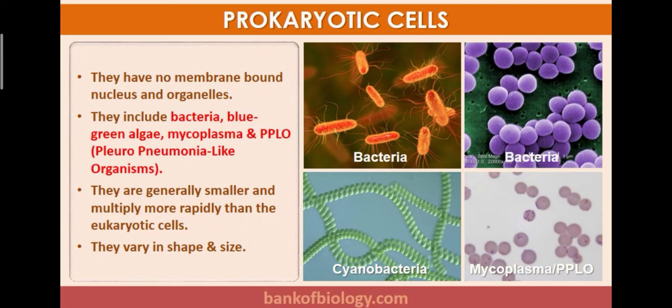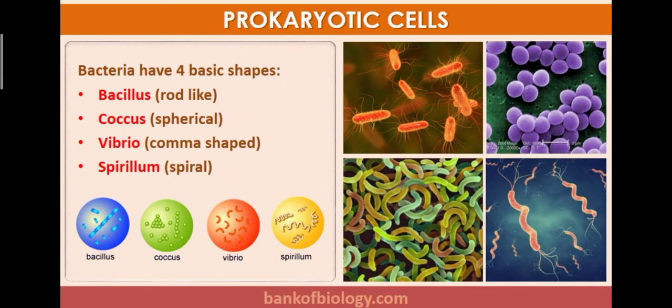Prokaryotic cells vary in shape and size. Bacteria especially have four basic shapes: Bacillus — rod-like structure; Coccus — spherical or round structure; Vibrio — comma-shaped; and Spiral — spring-like structure. In the picture you can clearly see what are comma-shaped, rod-shaped, spherical, and spiral bacteria — these are the four basic shapes.